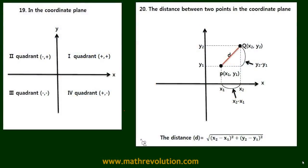In this video, we're going to look at some basic concepts on a coordinate plane. Now there are four quadrants in the coordinate plane: 1, 2, 3, and 4.